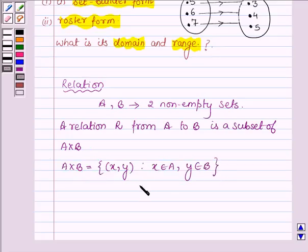And this subset is derived by describing a relationship between the first element and the second element of the ordered pair in A cross B. And here we are given the visual representation and with the help of this we will describe the relationship between the first element and the second element of the ordered pair in R and then represent it algebraically in the set builder form.